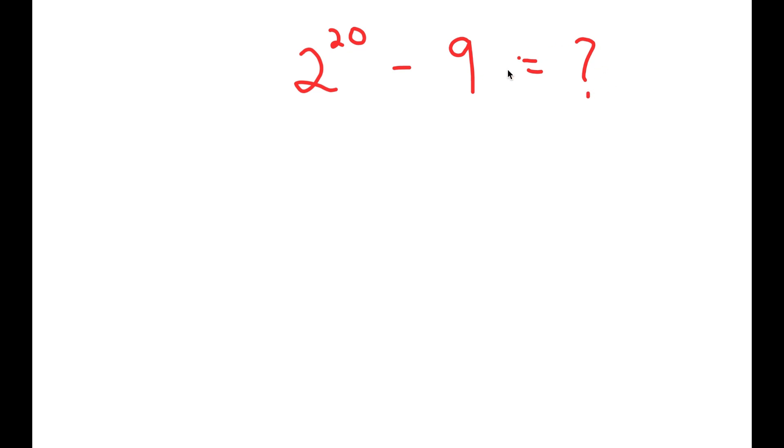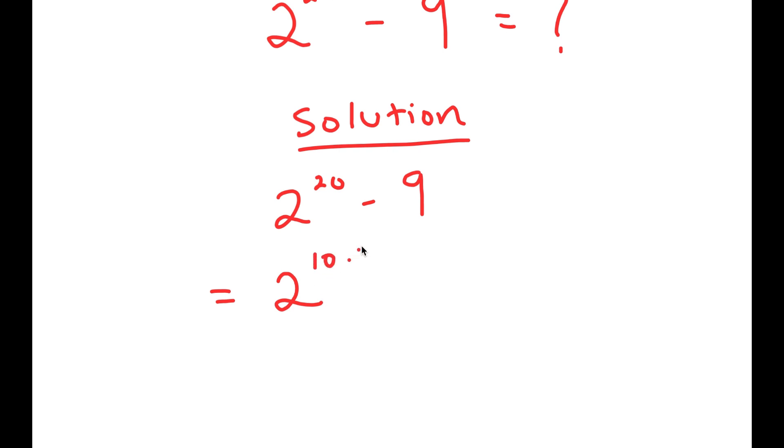So to find the value of this for my solution, I have 2 to the power of 20 minus 9, and what I'm first going to do is rewrite 2 to the power of 20 as 2 to the power of 10 times 2.